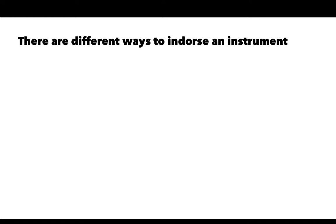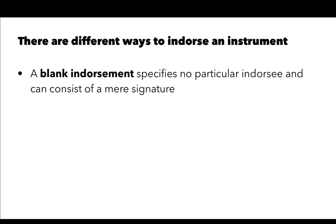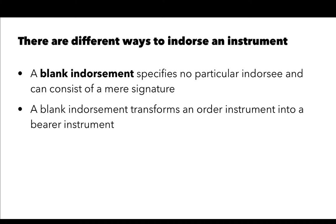The first type is a blank endorsement. A blank endorsement specifies no particular endorsee and can consist of a mere signature. When we endorse a check in blank, that means we just sign our name. At that point, the blank endorsement transforms the order instrument into a bearer instrument, meaning anyone who possesses that check can assert the rights in it.